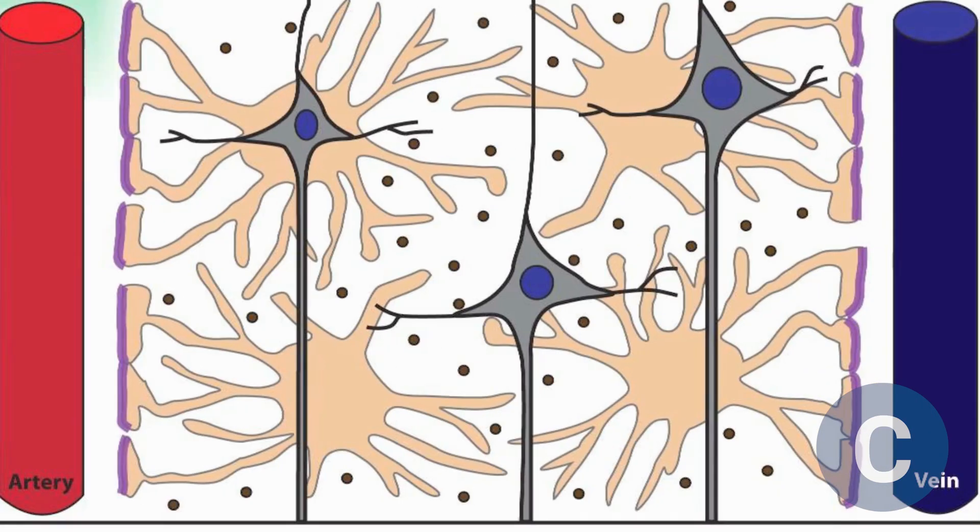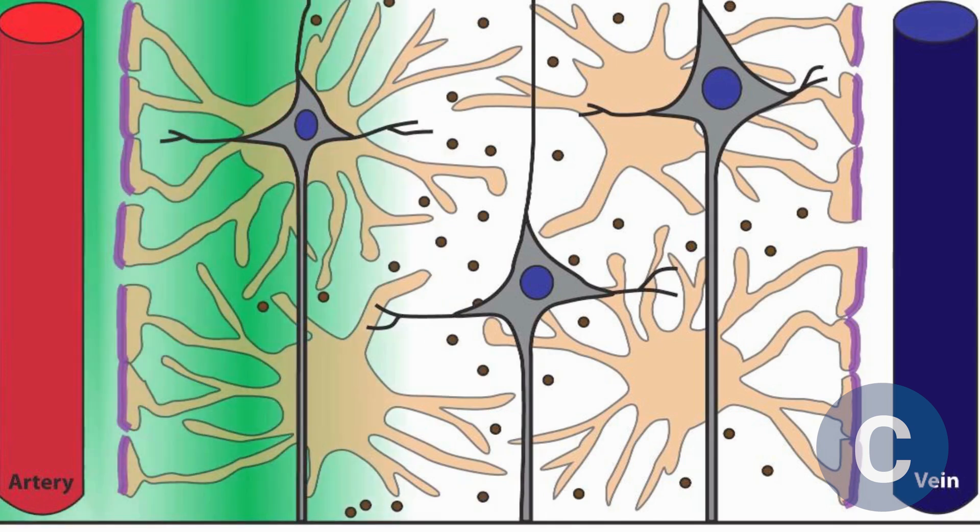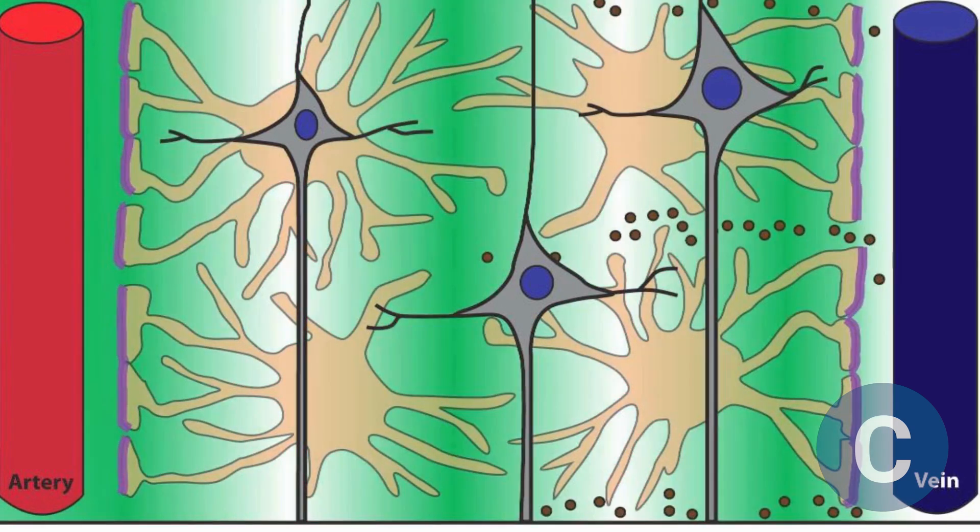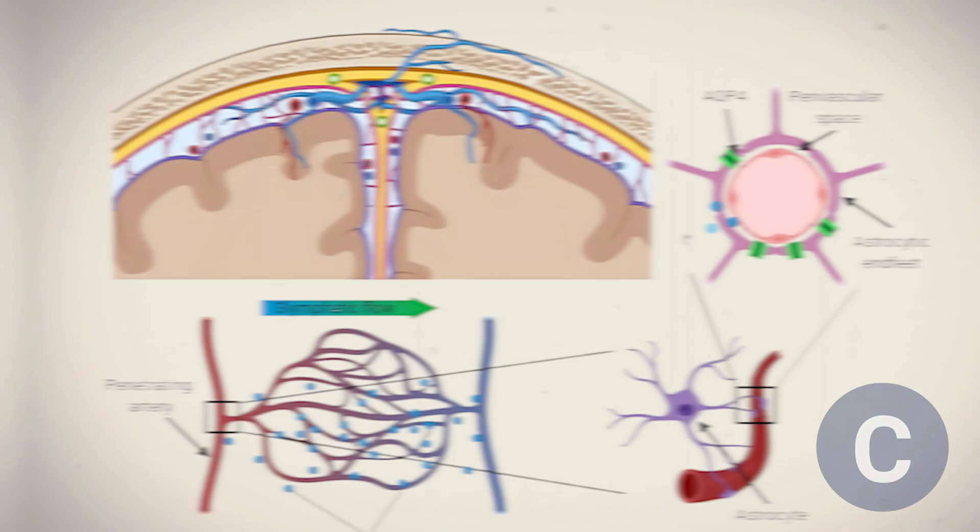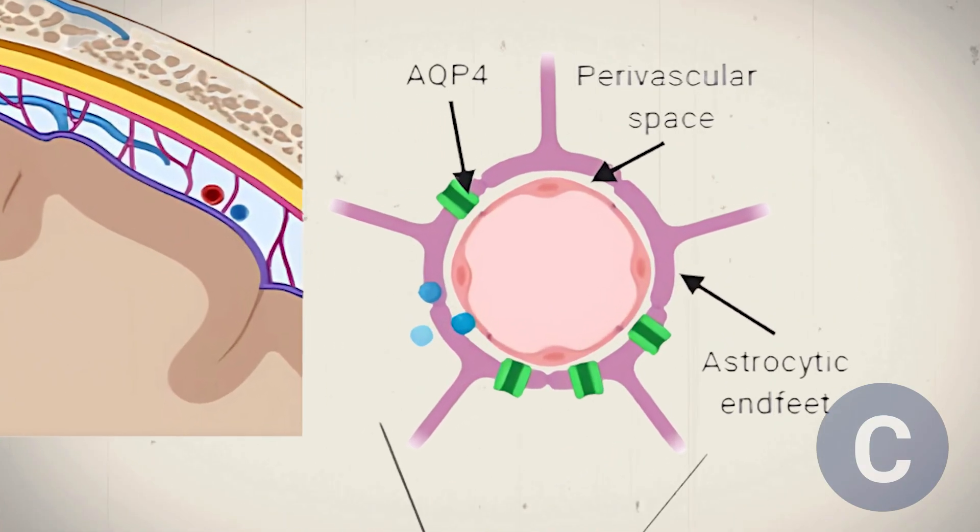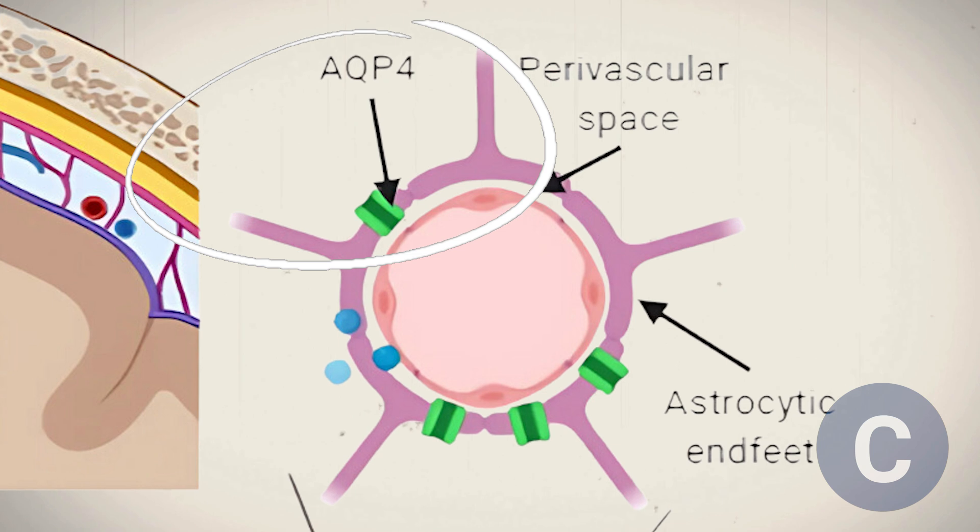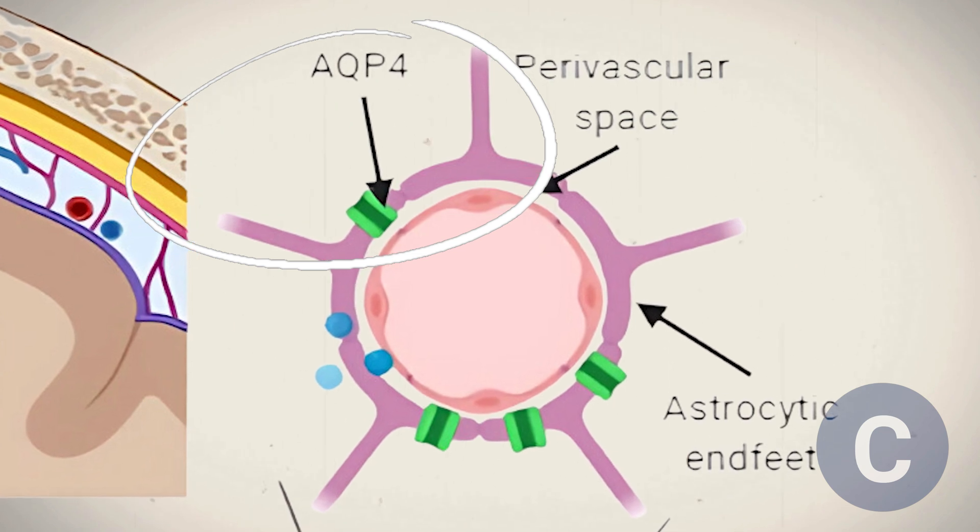After about an hour, the fluid, having entered via the arteries and moved through the interstitial tissue, finally reaches the brain's terminal veins, where it is drained. Based on prior knowledge, researchers hypothesized that aquaporin-4, AQP-4, could play a central role in this process.